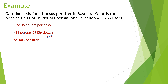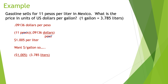Now we have to factor in how many liters there are per gallon, because we want dollars per gallon. So I take the $1.005 — kind of like when they post prices at the gas station as 1.009 — and multiply by 3.785 liters per gallon. Liters go on top so that they cancel out, and I'm left with the price in dollars per gallon.